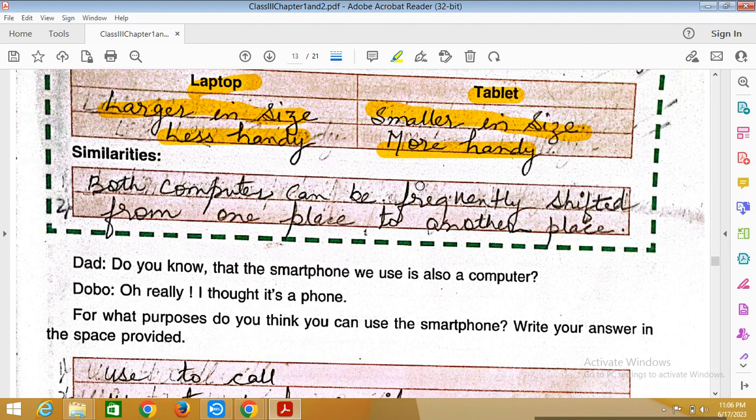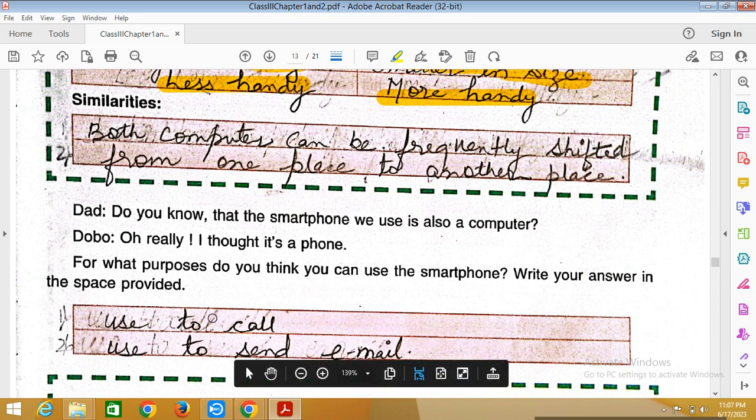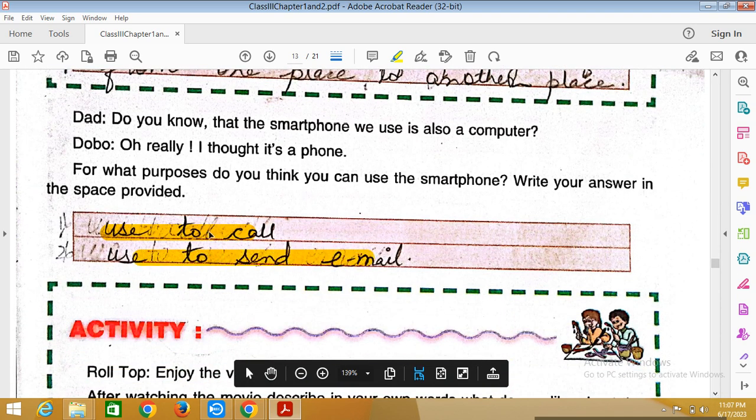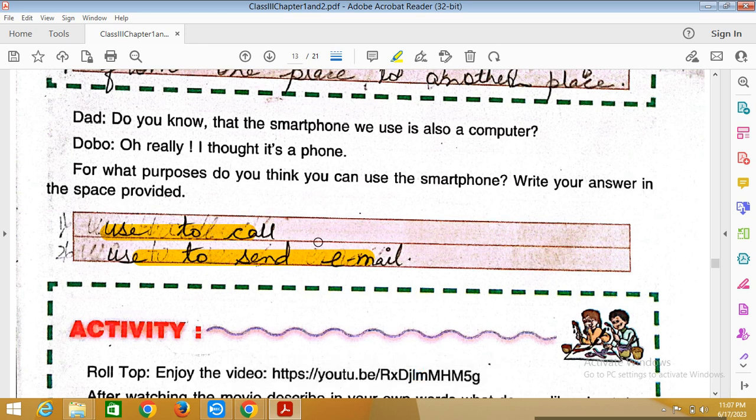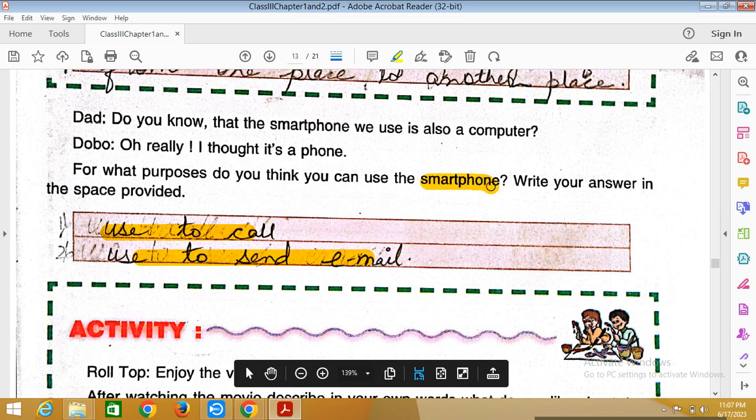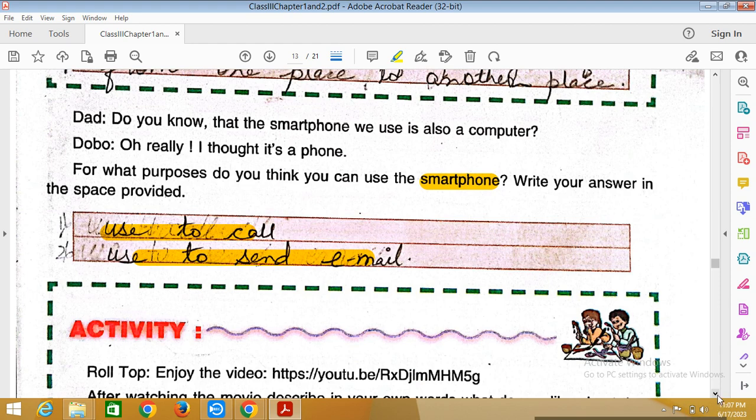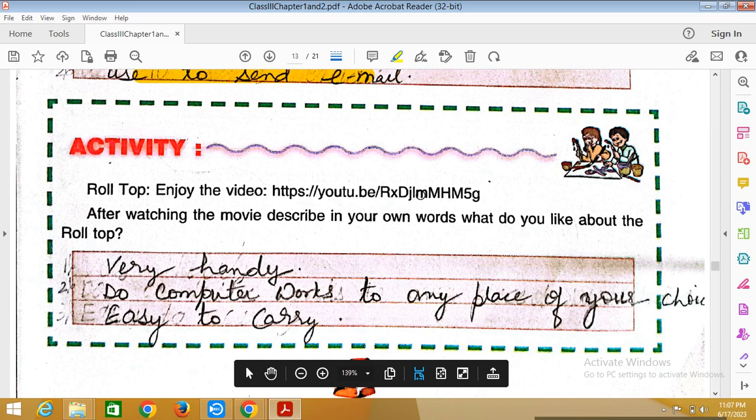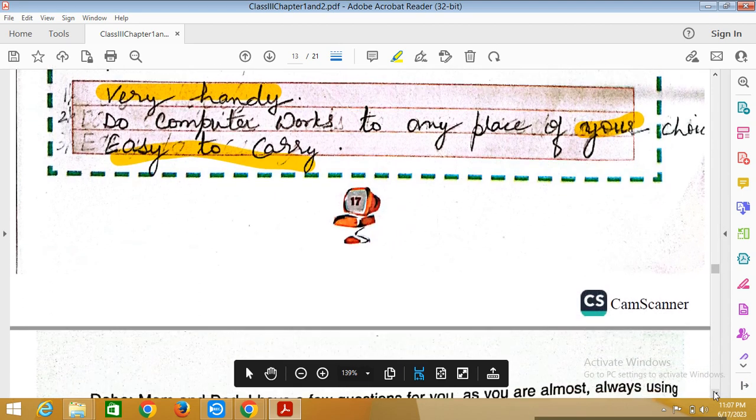Next activity: For what purposes do you think you can use the smartphone? Write your answer in the space provided. Use to call, use to send email, use to online banking, entertainment, online purchasing, online shopping, smartphone set an alarm. You can write down all these things. Roll top: Enjoy the video. This video will tell you about the topic. Do computer works, yes, of your choice. You can do all the work from computer and it is very easy to carry.